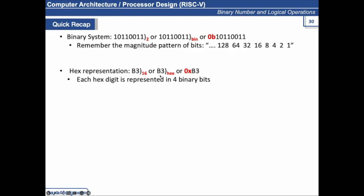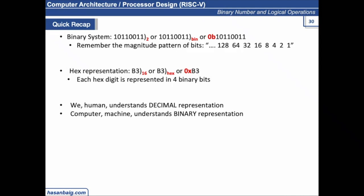We also discussed hex representation. We can represent a hex number with a subscript 16, or 'hex', or the third way: 0x or simply x. Each hex digit is represented in four binary bits; each octal digit represents three binary bits. We humans understand decimal, computers understand binary, and hexadecimal and octal are just alternative ways of representing binary bits.